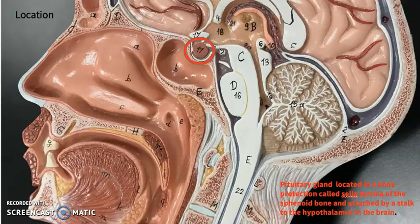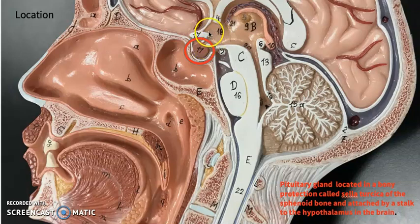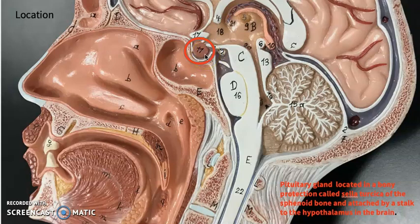Pituitary gland is located within a bony structure called sella turcica of the sphenoid bone at the base of the brain. It hangs from the hypothalamus with a tiny stalk. This stalk is formed by the blood vessels and axons of the nerves whose cell bodies are found in the hypothalamus. The pituitary gland has two lobes: the front portion we call the anterior lobe or adenohypophysis, and the back portion we call the posterior lobe or neurohypophysis.